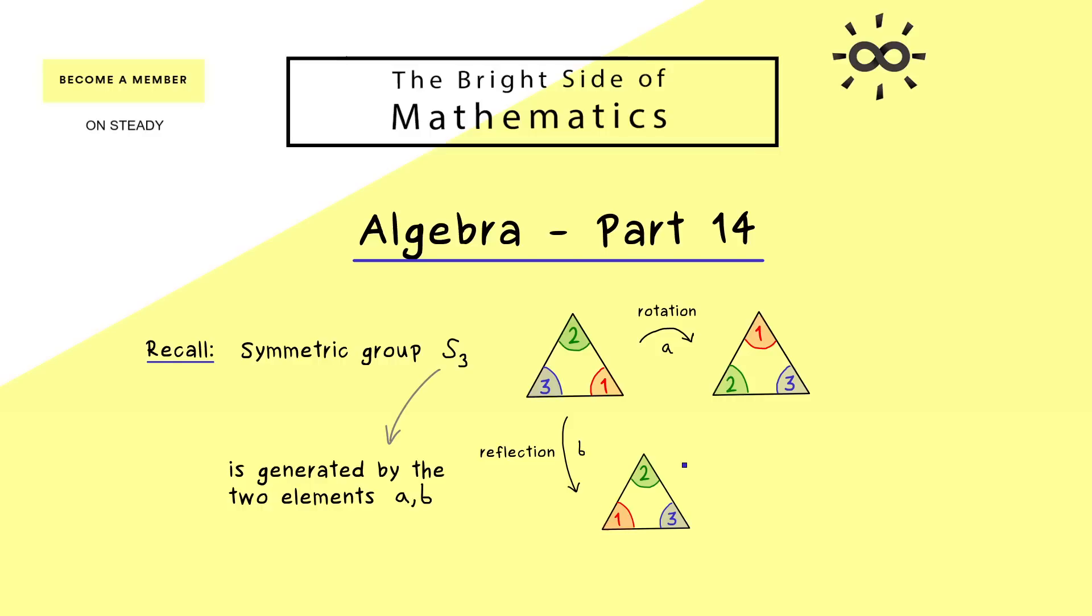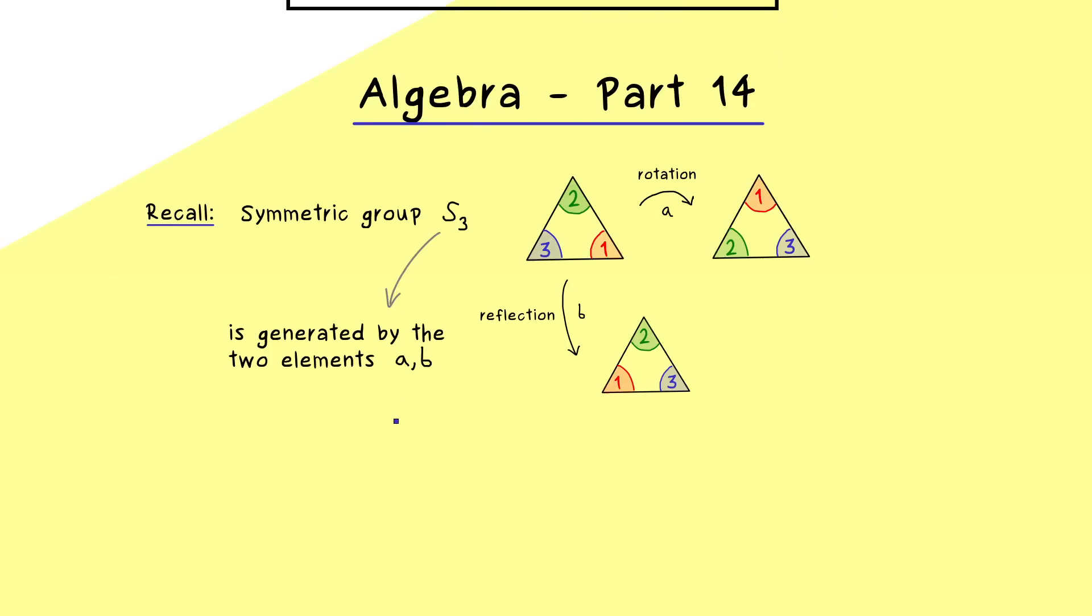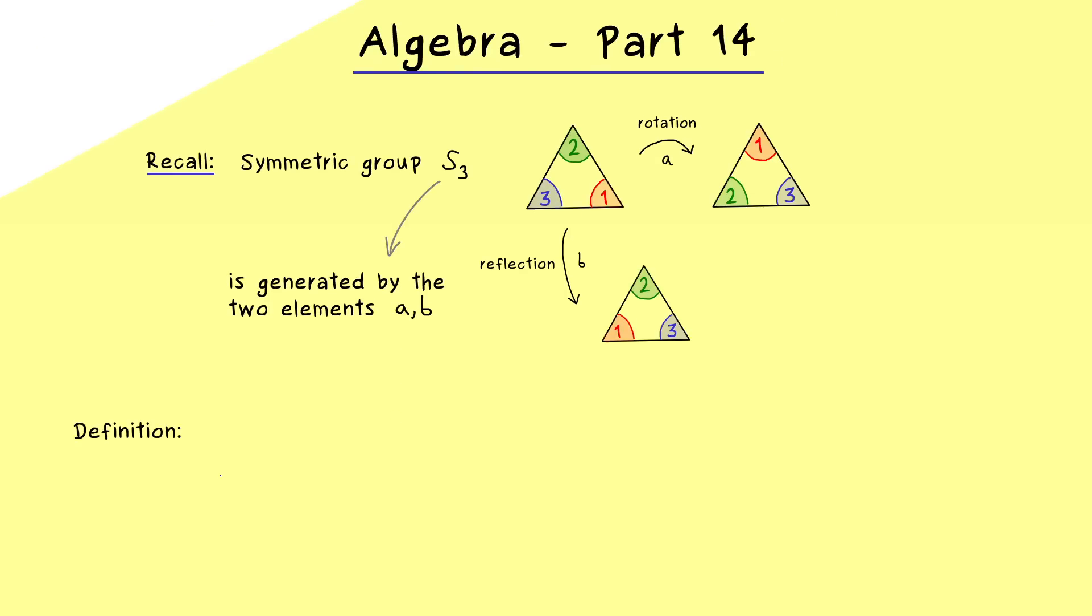How this works in practice for S3 we have seen in the last video, but now obviously we need a general definition for that. So the question is, what does it actually mean to say that a group is generated by some elements. And the best definition for that is to consider all possible subgroups that contain these elements.